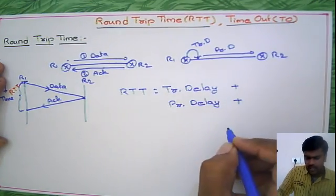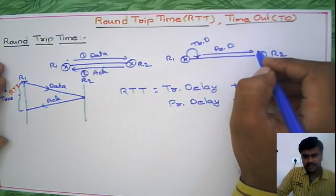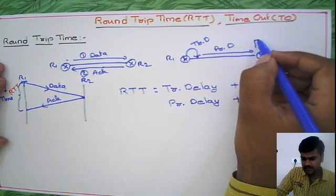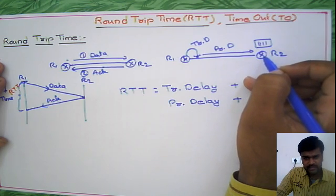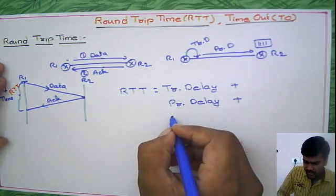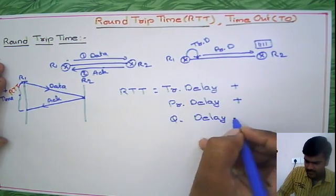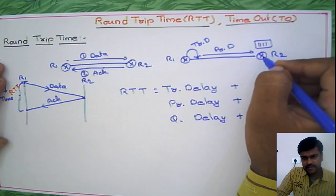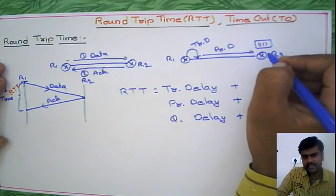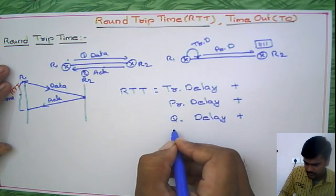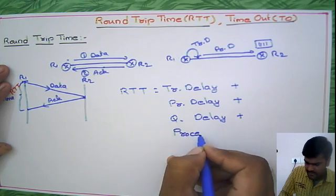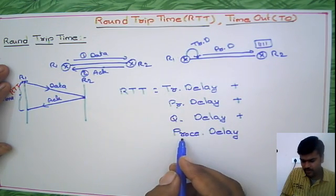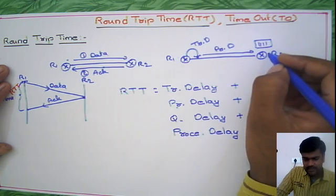After reaching R2, the packet has to wait in the buffer if the router is busy, so queuing delay must also be considered. Then the router will take the packet and process it, which takes a certain amount of time — that is processing delay. So both queuing delay and processing delay are components of round trip time.